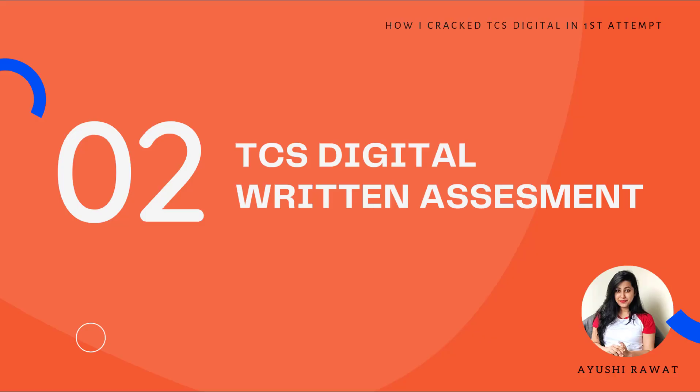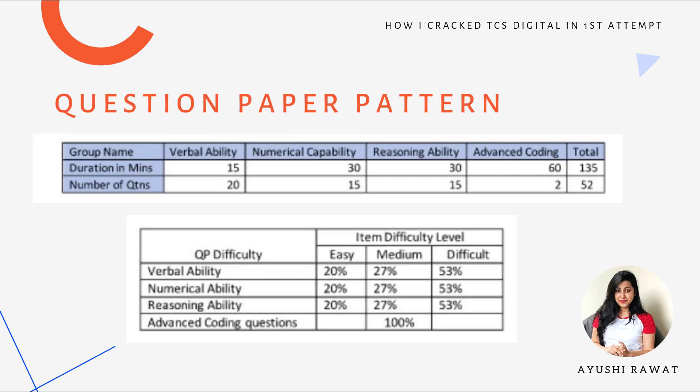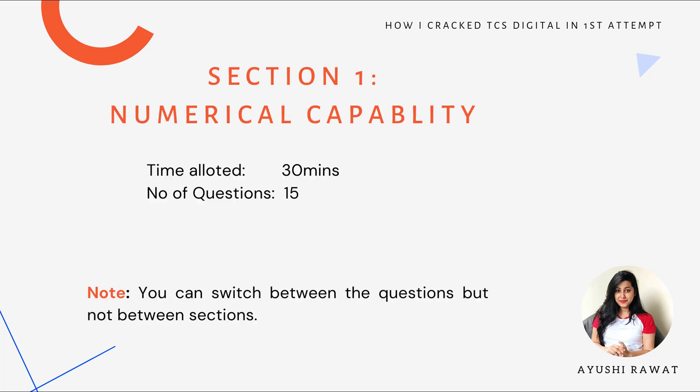Let's move to part 2 — the written assessment. The question paper will contain 4 sections. The total exam duration is 2 hours 15 minutes and the total number of questions is 52. Numerical capability: the allotted time will be 30 minutes and you will have to solve 15 questions within the given time frame. The questions will test your aptitude knowledge.